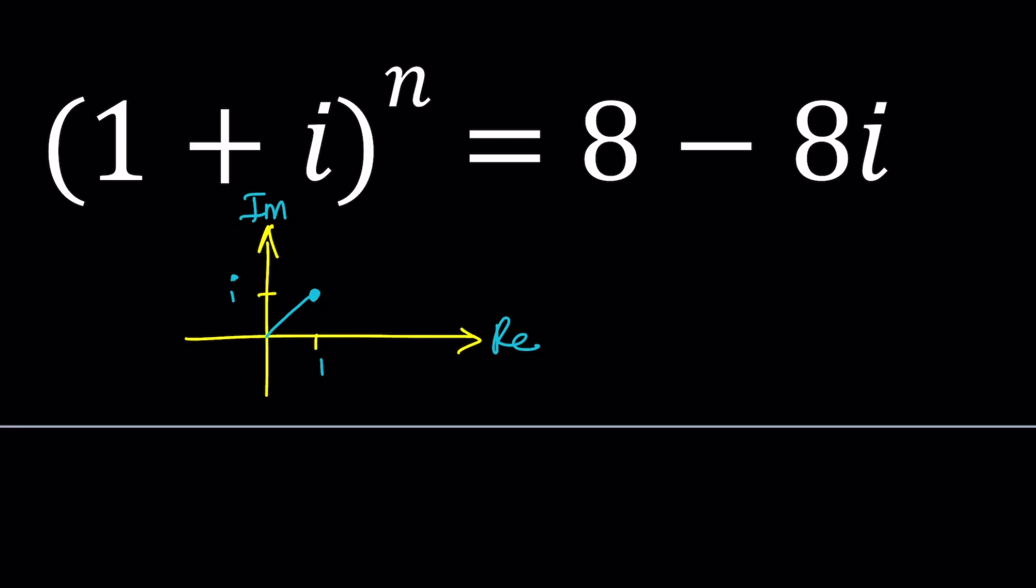So two things to know: First, the modulus; second, the argument. Argument is the angle that it makes with the positive real axis. In this case, that happens to be π/4 because it is the diagonal.